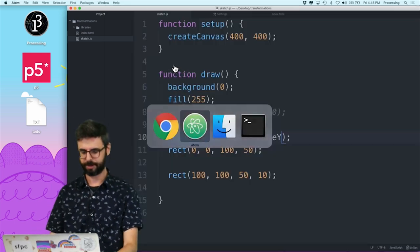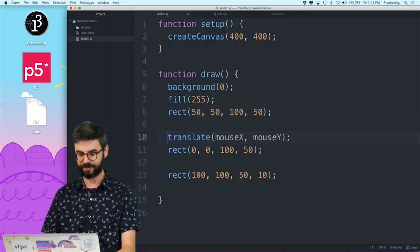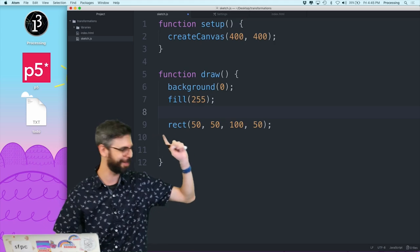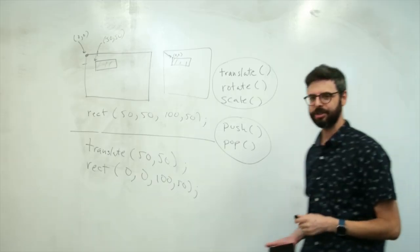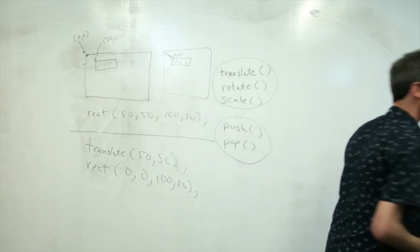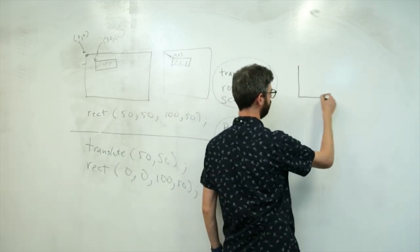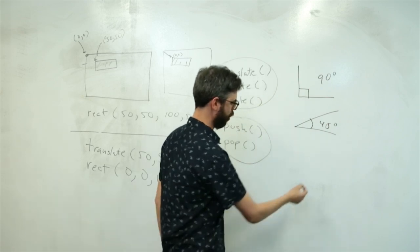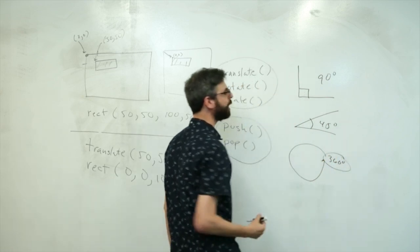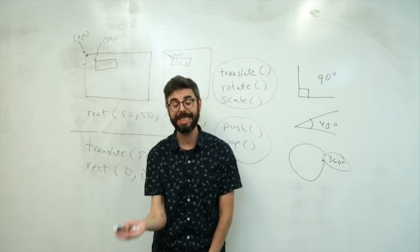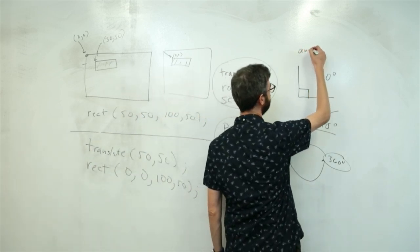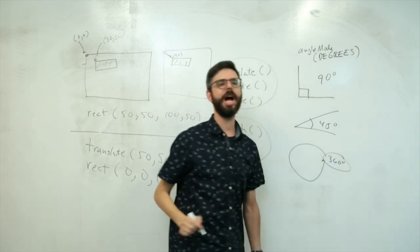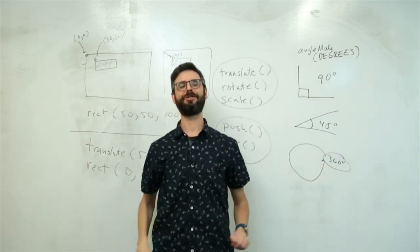Let's put this rectangle back at 50, 50 and get rid of translate. Now — hello, angles, time for a little review. If you're like me, you probably think of angles in terms of degrees. This is a 90-degree angle, this is a 45-degree angle, and a full rotation is 360 degrees. We can actually use degrees in P5 — there's a function where I can say angleMode(DEGREES) to tell P5 I like to think in terms of degrees.